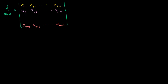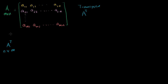I'm going to define the transpose of this matrix as A with the superscript T. It's essentially the matrix A with all the rows and columns swapped. So my matrix A transpose is going to be an n by m matrix — notice the original had m rows and n columns, and now this has n rows and m columns.